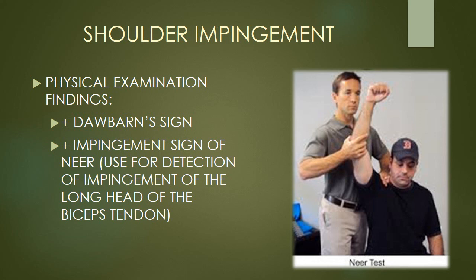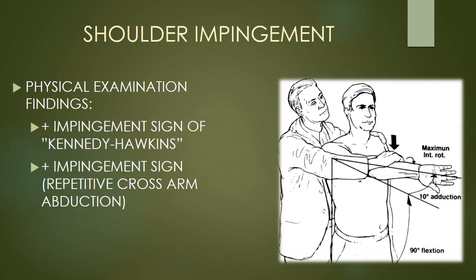Physical examination findings that suggest subacromial impingement syndrome include a positive Dawbarn's sign, which is suggestive of subacromial bursitis. We also use various impingement tests: the impingement sign of Neer, the plain impingement sign, and the Kennedy-Hawkins test — all different maneuvers designed to reproduce pain within the subacromial space. Here's a diagram showing the Kennedy-Hawkins impingement sign, a very useful test that will frequently and easily reproduce symptoms of impingement syndrome if they are present.